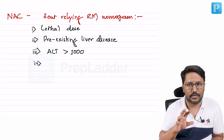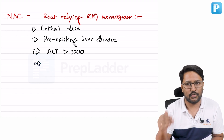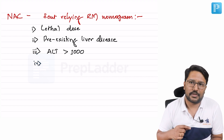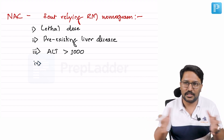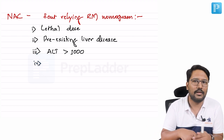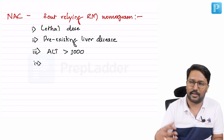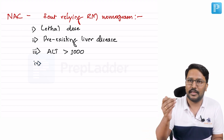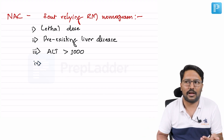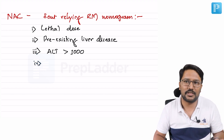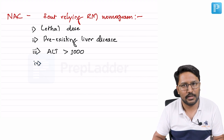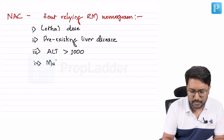Fourth circumstance: multiple consumptions spread out in time. The nomogram assumes a single toxic consumption peaking at four hours, but if a patient takes several tablets in the morning, more at noon, more in the evening, and so on, there will be multiple peaks. The nomogram cannot predict toxicity in staggered consumption, so administer N-acetylcysteine without checking paracetamol levels.